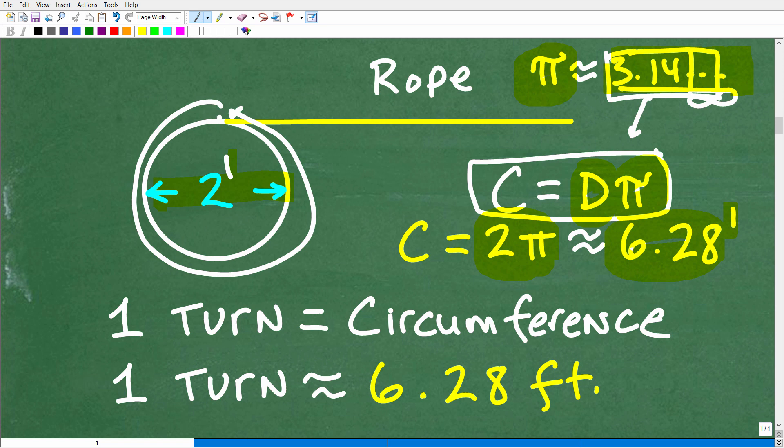So in other words, if we had a little rope there, we went around one time, and it kind of took that rope and laid it out straight like that, it would be approximately 6.28 feet long. Okay, so again, one turn of the pulley is equivalent to the circumference. So one turn, we're going to bring in about 6.28 feet of rope.